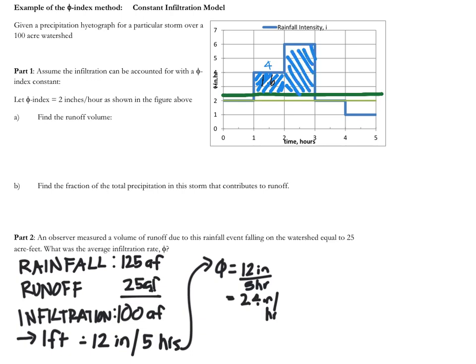Okay, so we had six inches of rain, and again we have our 2.4 inches of infiltration. And so this leaves us with 3.6 inches of runoff.